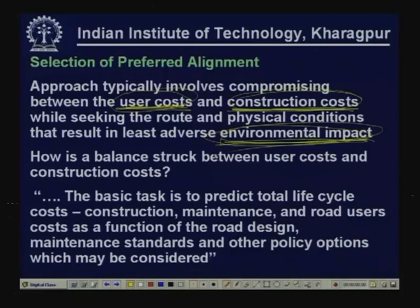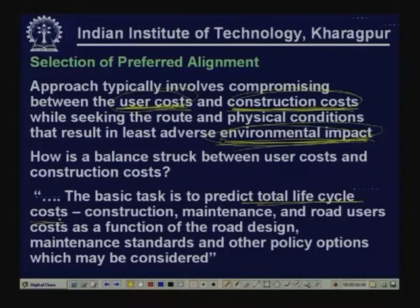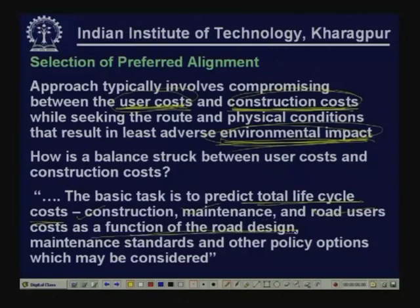The basic task is to predict the total life cycle cost. Instead of considering only construction cost or only user cost, it is more rational to predict total life cycle cost, considering construction cost, maintenance cost, and road user cost — all of which are functions of the road design and other policy options. Essentially, we select the preferred alignment that minimizes life cycle cost, considering all three components: construction cost, maintenance cost, and road user cost.